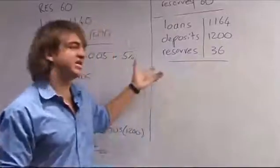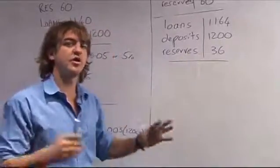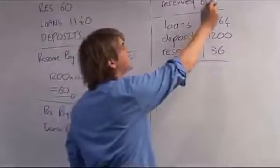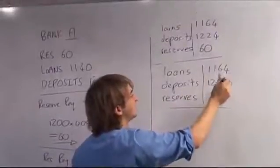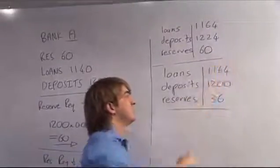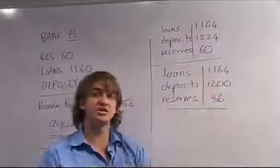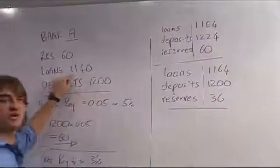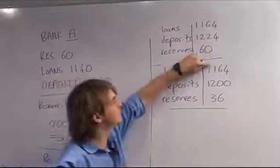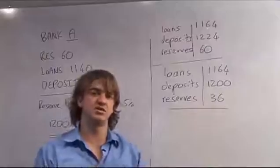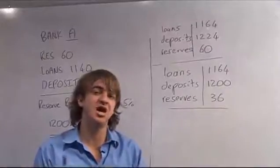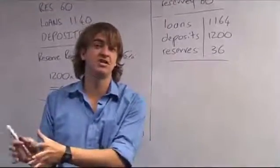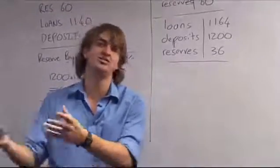What has happened to money supply in this example? Money supply has increased because reserves decreased from 60 to 36, and that money has been lent out as loans. Loans increased from 1,140 to 1,164, so the amount of money in the economy has increased. However, you cannot tell by exactly how much, because you don't know what the other banks have done with their deposits and loans, or whether they're keeping to 3%.